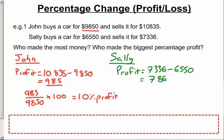For Sally, well she originally spent $6,550 but she made $786. So her percentage profit was the $786 that she made over how much she originally spent and times by 100 because we want it as a percentage. And that means that her percentage profit was 12%.